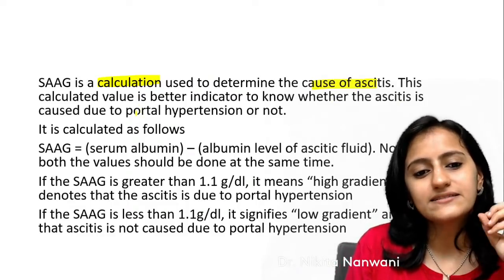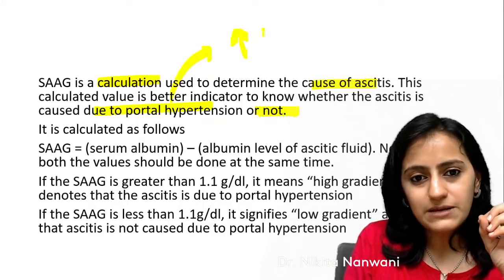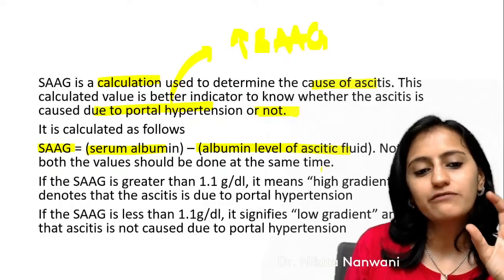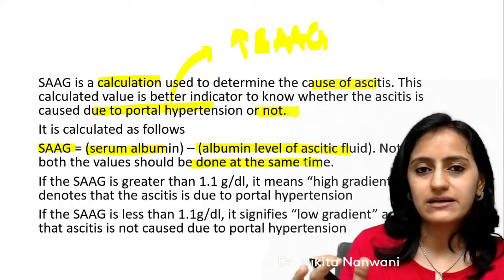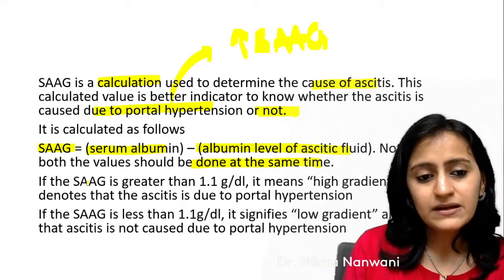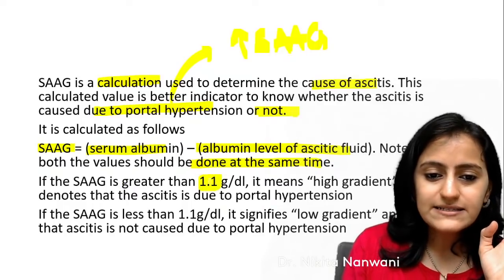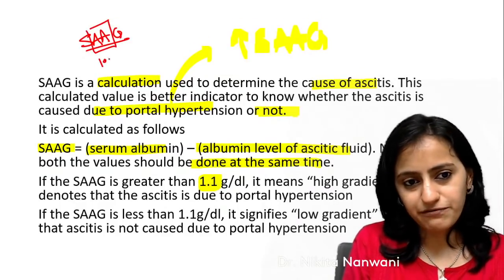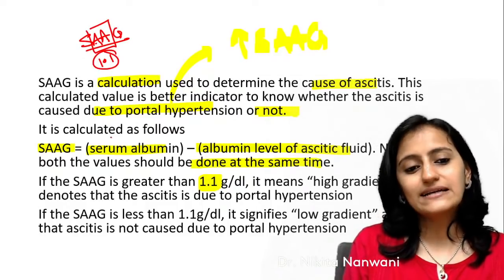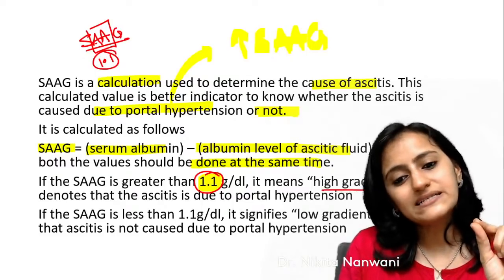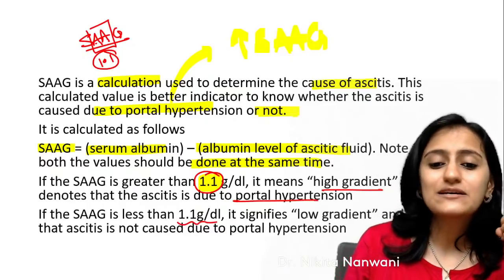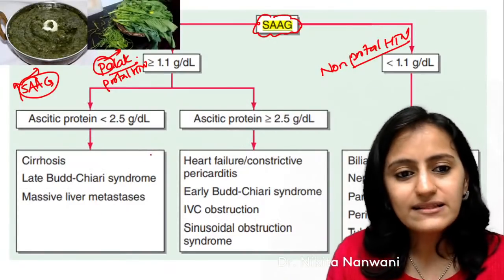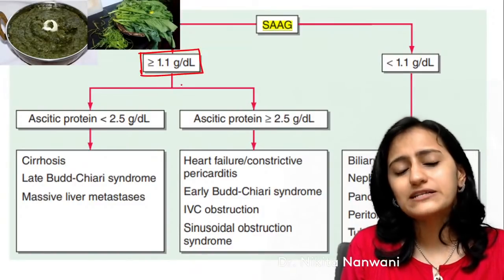SAAG is a calculation used to determine the cause of ascites — whether due to portal hypertension or not. If it is due to portal hypertension, SAAG is high. SAAG equals serum albumin minus ascitic albumin, and both samples must be taken at the same time. The cutoff value is 1.1 — remember: double A (AA) is the first alphabet, representing 1.1. SAAG more than 1.1 is high gradient; less than 1.1 is low gradient.